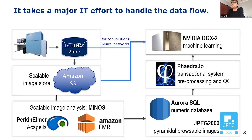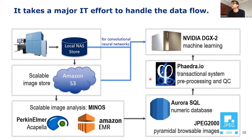We migrated our systems from an on-premises setup with a couple of single-server Columbus instances to an elastically scalable setup deployed in AWS. After image generation, data are first exported to a local NAS store, which serves as a staging area until data are uploaded to S3, Amazon's object storage service. For image analysis, we rely on Minos, which at its core uses a solution developed together with PerkinElmer. It uses AWS Elastic MapReduce to run the Acapella image analysis jobs on a Spark cluster. After image analysis, the results are imported into Fader. The extracted features are stored in an Aurora Postgres database, and the images are compressed into JPEG 2000 format and stored in S3.